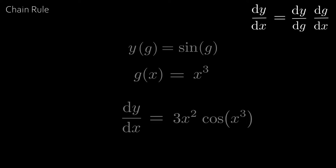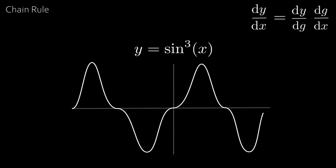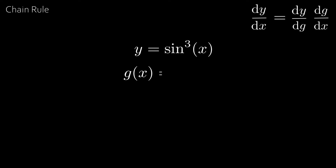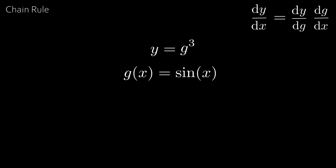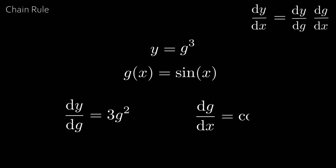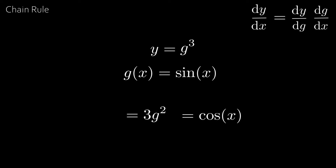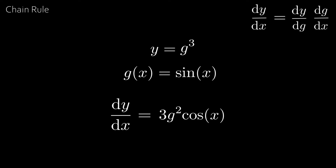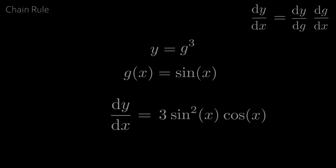Take y equal to sin x all cubed. We see that this is a composition, because if we take g of x equal to sin x, then y equals g cubed. Then dy by dg is equal to 3g squared, and dg by dx is equal to cosine x. By the chain rule, dy by dx is equal to 3g squared cosine x. Since g equals sin x, we get dy by dx is equal to 3 sin squared x cosine x.